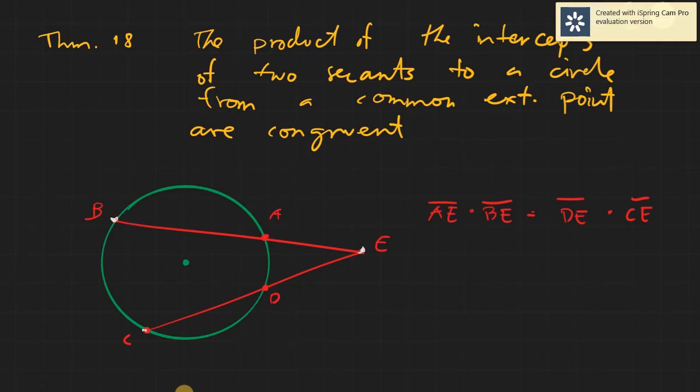And the condition for you to satisfy this theorem number 18 is that the secants must intersect at an external point. Dapat na sa labas yung intersection nila. And this theorem would state that itong isang buong second na yan, this entire secant, when you multiply it to the length of the one segment that is outside of that given circle.